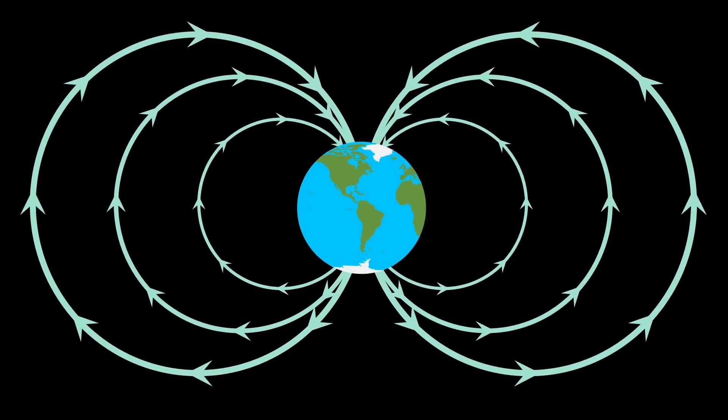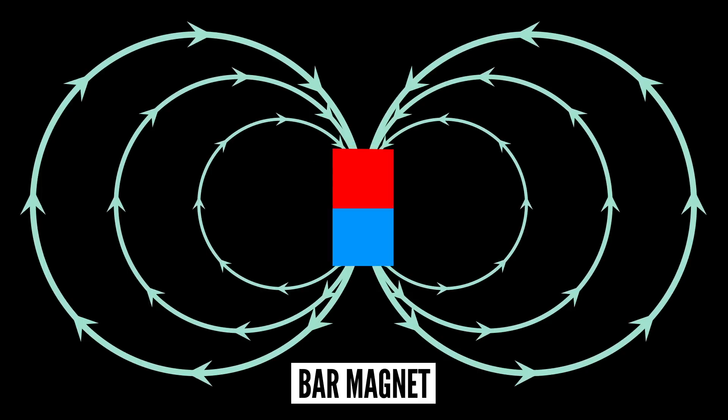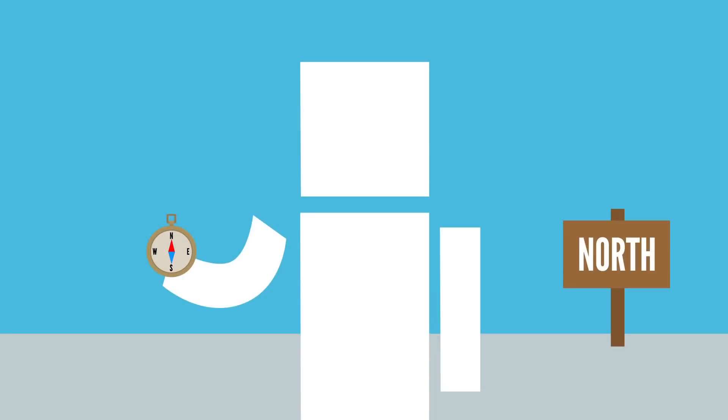You can think of Earth as a giant bar magnet, where the magnetic field lines go from magnetic north to south. So if your body is pointed north, a magnetic compass in your hand would be pointing north too.